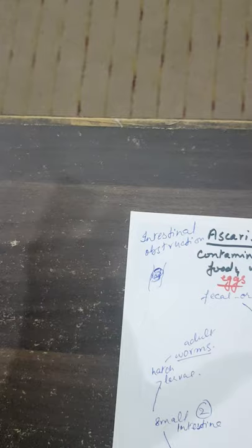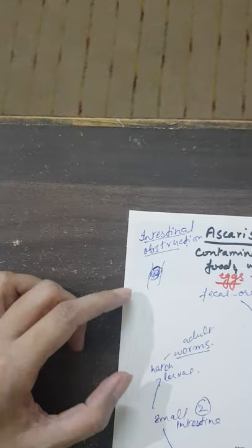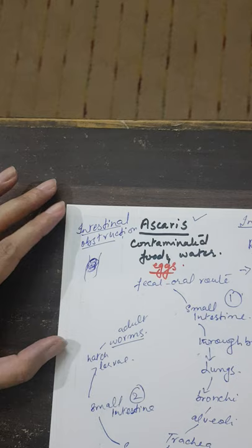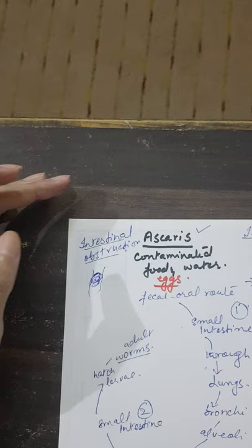In the small intestine the second time, the eggs hatch and change into the larval form, which then develop into adult worms. Unlike hookworms, Ascaris does not attach to the intestinal wall — the adult worms remain free within the lumen of the intestine, forming masses. A very common complication of Ascaris is intestinal obstruction, which presents as acute abdomen requiring emergency surgery.